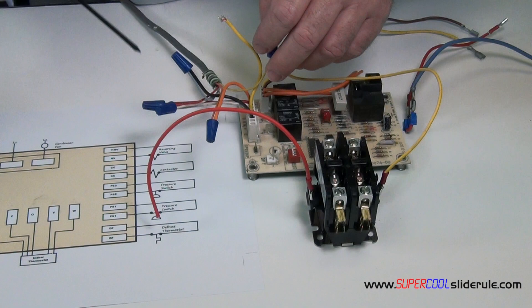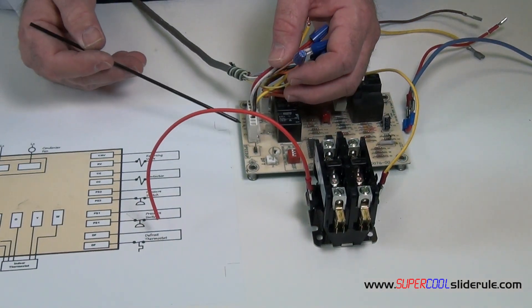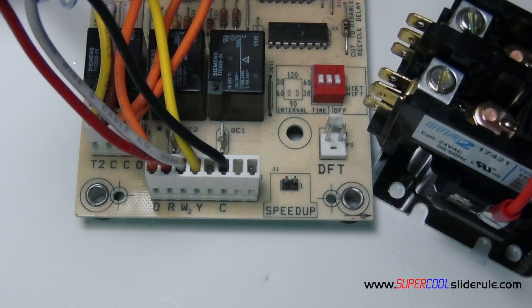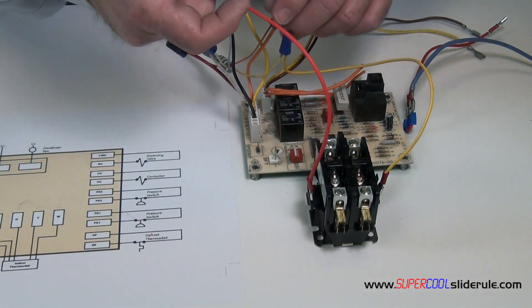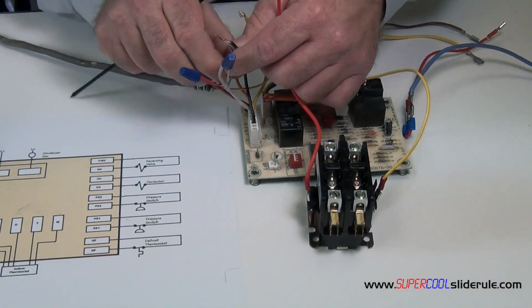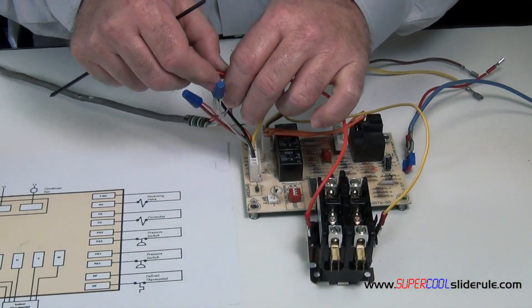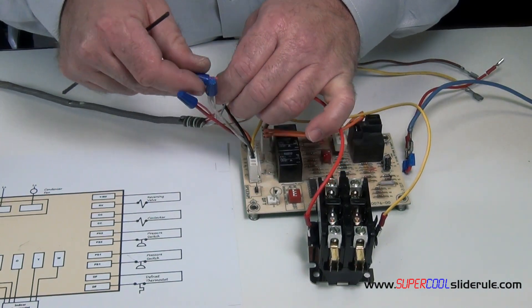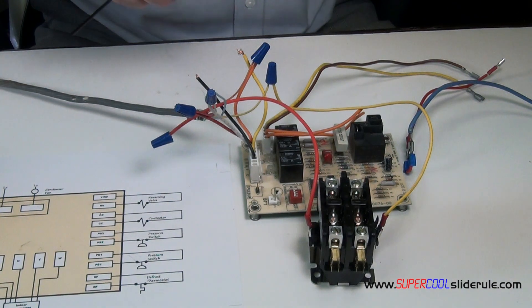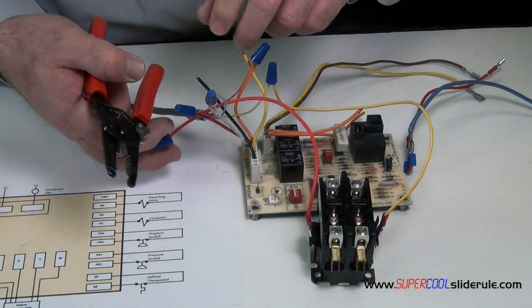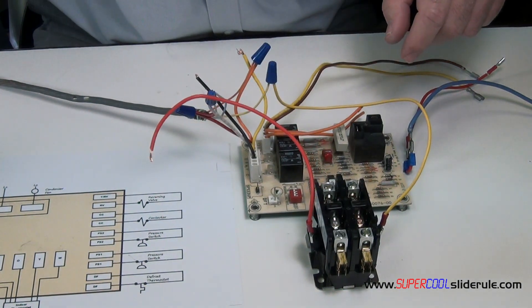On the other we're looking here, the designations are down here. We have a common Y, W, R, and O. Once we have that connected we take the other side and connect it to our common which is our C. Now right now I'm just going to put these on here for just a second because what we have to do, the other thing that's going to need to go on this is our wire for our reversing valve.